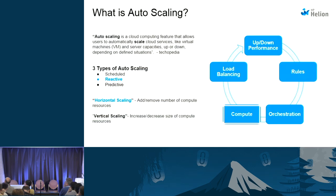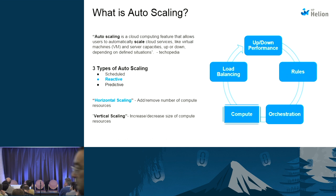Auto scaling is a cloud computing feature that enables users to scale their cloud service or applications based on situations that arise, either scaling up or scaling down. The cloud service could be of any nature - infrastructure as a service, platform as a service, or even software as a service. In general there are three kinds of auto scaling: scheduled, reactive, and proactive. Scheduled is really helpful when you know upfront that there is a time when the load is going to be up or down, like Thanksgiving Day or a big sale day.